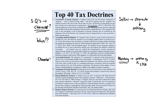The assignment of income doctrine is a huge aspect of tax law. The question it deals with is the 'who' question — who has to record income? Who gets the deduction? Who gets to utilize the credit? The assignment of income doctrine broadly states that income from services is taxed to the one who performs the services, and income from property is taxed to the owner of the property.